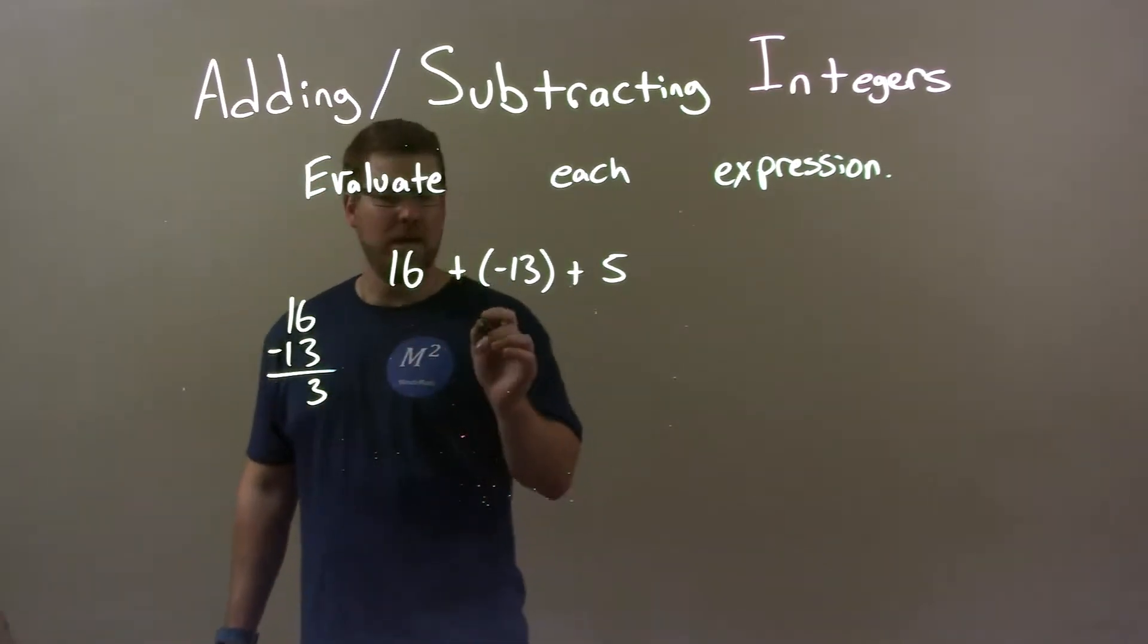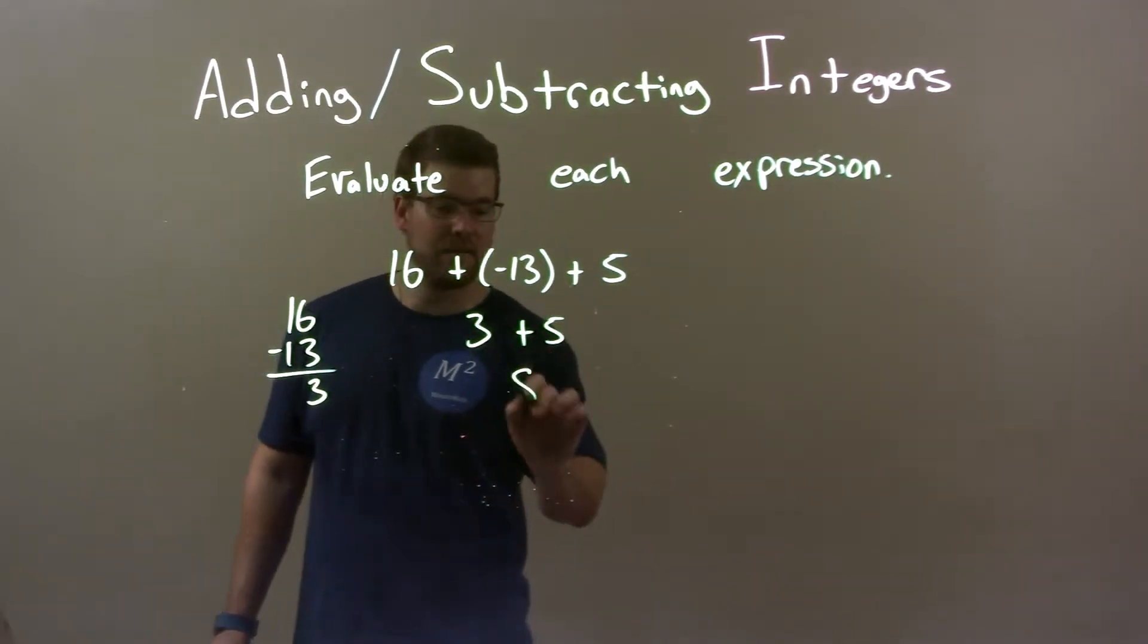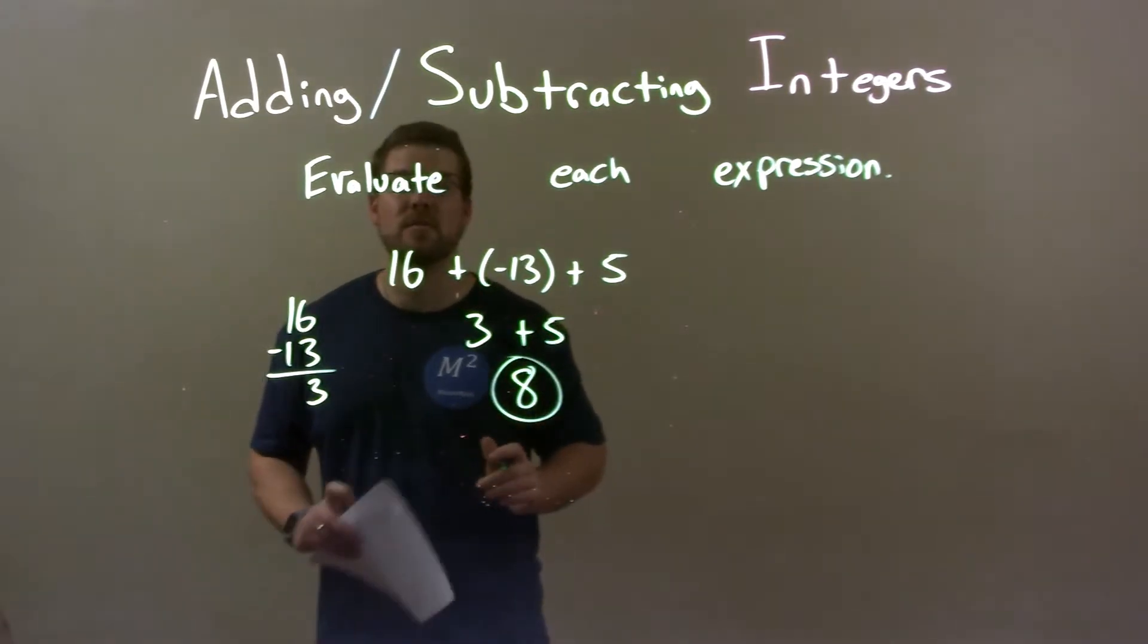And so we have a 3 right here. Bring down the 5, and now 3 plus 5 is just 8. So our final answer here is just 8.